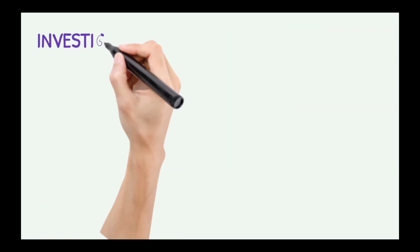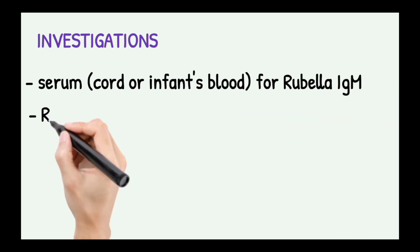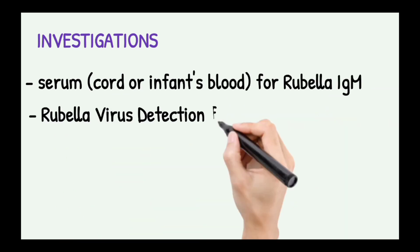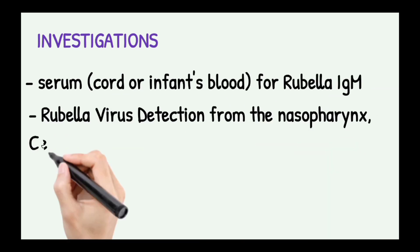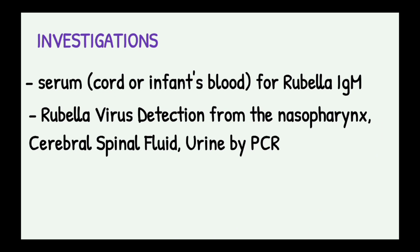For investigations in Congenital Rubella Syndrome, one can test serum or infant's blood for Rubella IgM. We can also perform Rubella virus detection from the nasopharynx, cerebrospinal fluid, and urine by PCR.